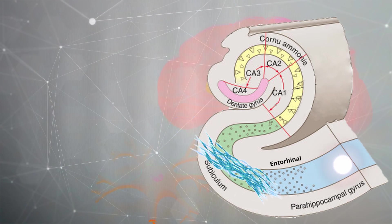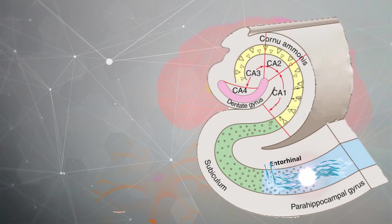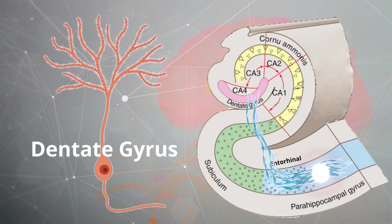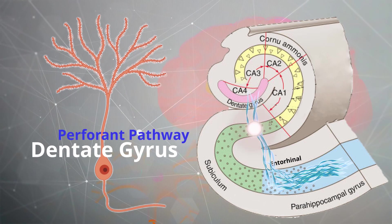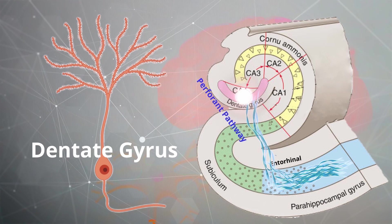These bundles of fibers in the entorhinal cortex will project to the granule cells of the dentate gyrus, via the perforant pathway. This is the first pathway in the trisynaptic circuit.